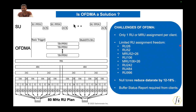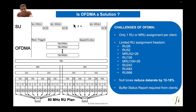These RU assignment constraints complicate the scheduling algorithm significantly. The complexity of the RU allocation algorithm is going to be very high, and whether the access point really has the memory and compute resources to do all those calculations in such limited time is a question — because it has to decide on RU allocation very quickly. Otherwise, it wastes air time sitting doing computations.